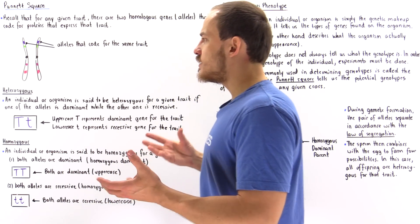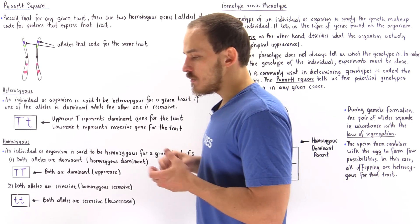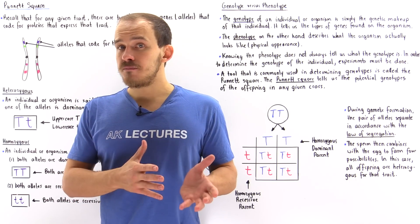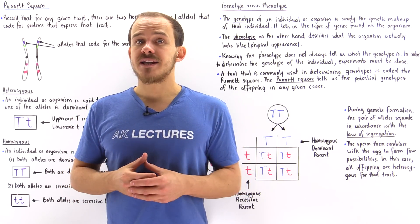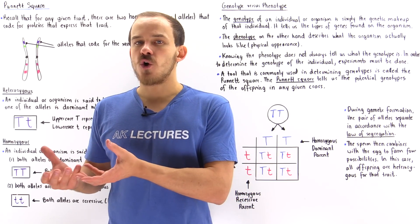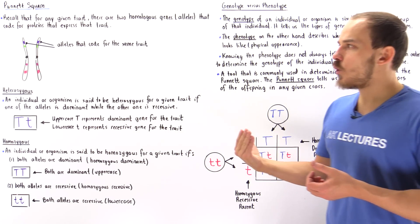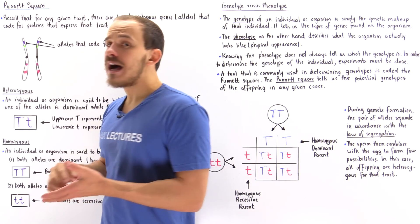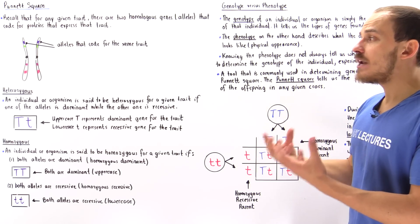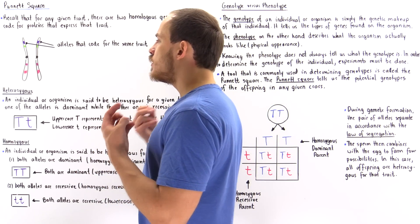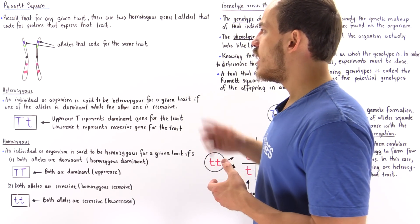Before we look at these terms, let's recall the following fact. In any diploid organism, if we examine a somatic cell, we'll see that for every chromosome there is always a homologous chromosome. Two homologous chromosomes are chromosomes that have the same type of size, shape, and structure, and also carry genes that code for proteins expressing the same type of trait. Let's take a look at the following homologous pair.